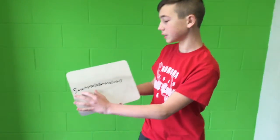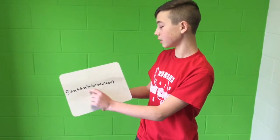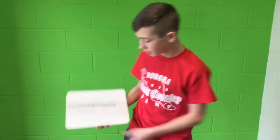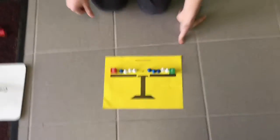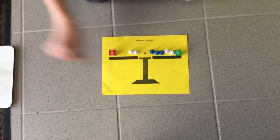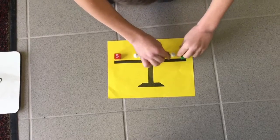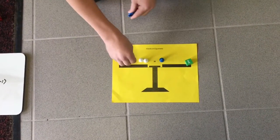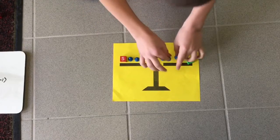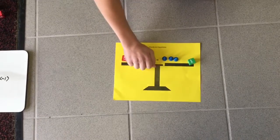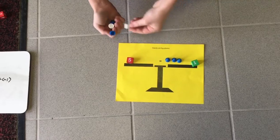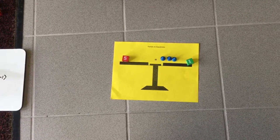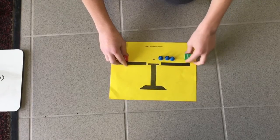For my last problem, I have 5 plus x plus negative 3x equals 3x plus negative 2 plus negative 1. You want to take away the pairs of zeros, and then I'm going to add 2 blue pawns to each side, so you can get rid of those.